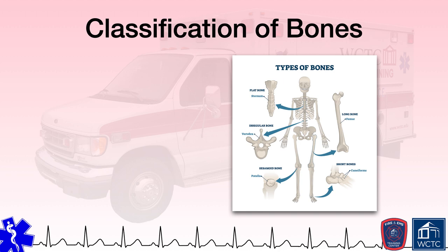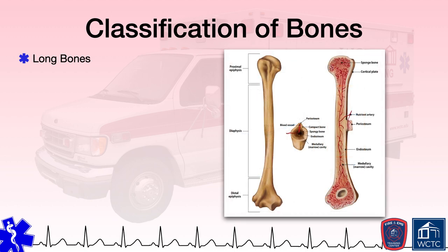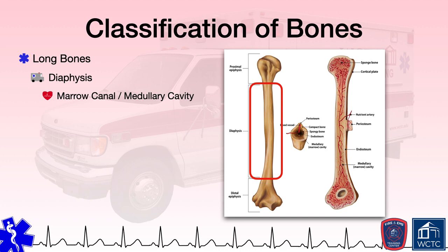The first type of bones within the skeletal system are long bones, which are long in length when compared to other bones or their own width. Such long bones include those in the arms—ulna and radius—and the legs. These bones are recognized to have two main regions: the diaphysis and the epiphysis. The diaphysis is a long, hollow tube of bone that runs between the wider ends. The inside is referred to as the medullary cavity or marrow canal, lined with a thin membrane called the endosteum, which helps with forming and repairing bone. Within the medullary cavity is yellow bone marrow.